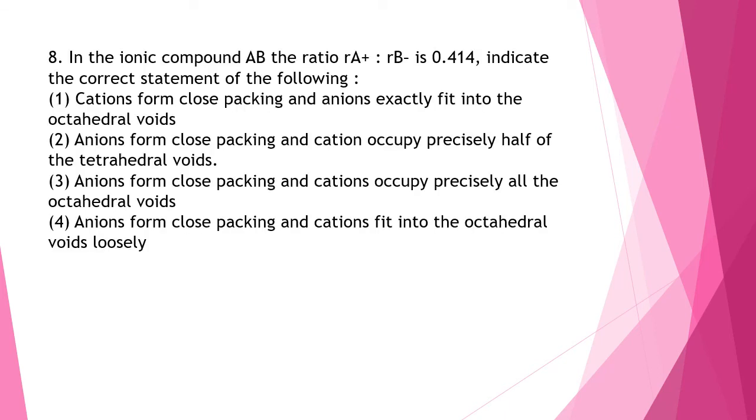Question 8. In the ionic compound AB, the ratio of R A positive to R B negative is 0.414. Indicate the correct statement of the following. So you need to understand that this is octahedral void. In octahedral void, the radius of void divided by radius of anion is 0.414.